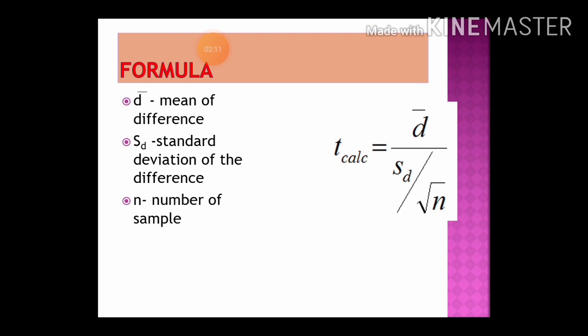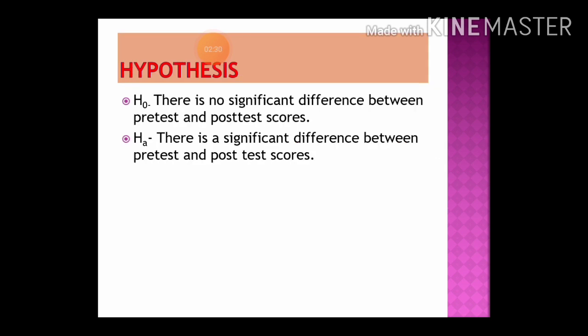Let us see the formula for the paired t-test. It is calculated as d-bar divided by (SD divided by the square root of n), where d-bar is the mean of the differences between the pre-test and post-test scores, SD is the standard deviation of those differences, and n is the number of samples.